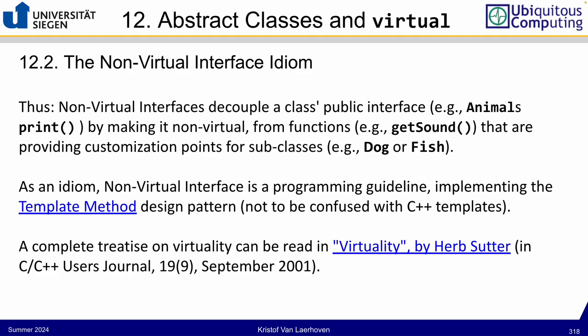The NVI idiom decouples the public interface from the customization point. The public method 'print' is stable, while the private or protected method — like 'get_sound' — is what derived classes override. This is an idiom, similar to a design pattern: a guideline for good code structure. More idioms and design patterns will be covered in upcoming sessions.